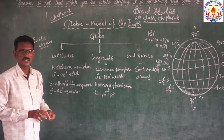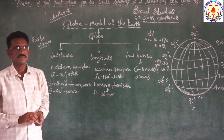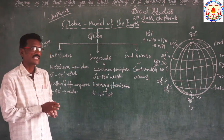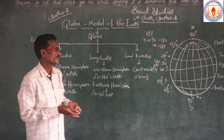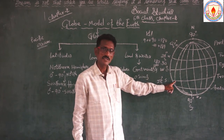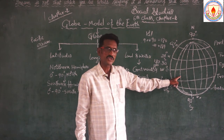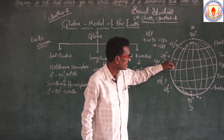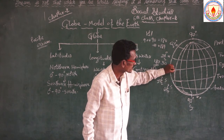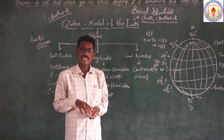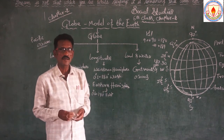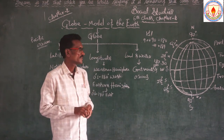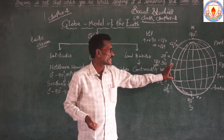One latitude and one longitude — these are two imaginary lines. Using these we are able to find time and climate. When latitudes and longitudes are connected, finding a particular grid, we are able to find a particular place on the map. I hope you are understanding latitudes and longitudes.